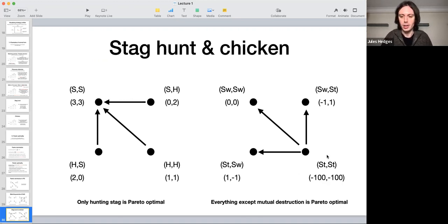Then in chicken, we will find that mutual destruction is kind of obviously Pareto dominated by everything else. The three other strategies are all Pareto optimal.